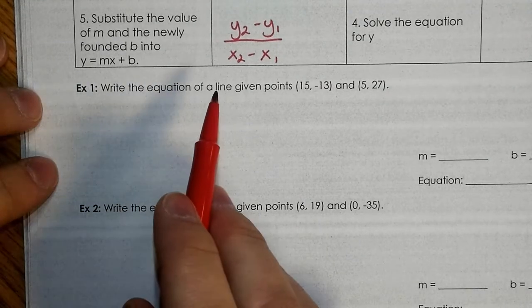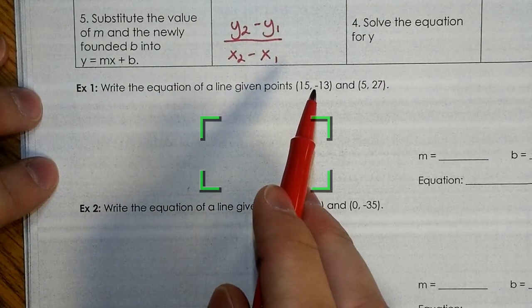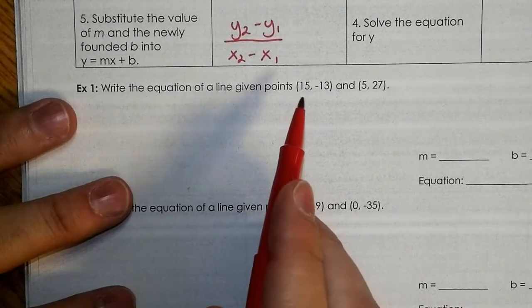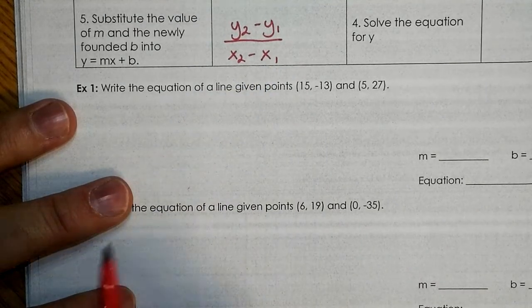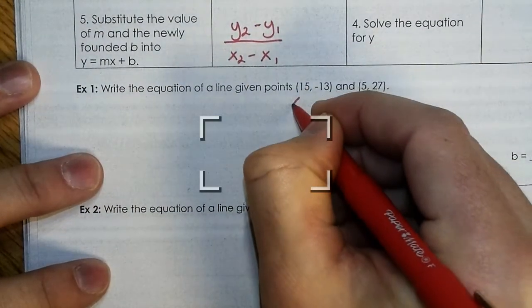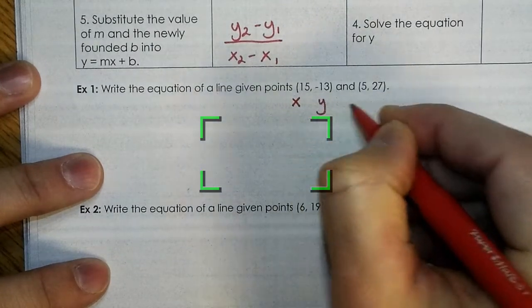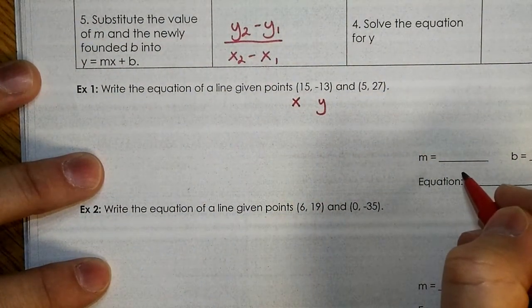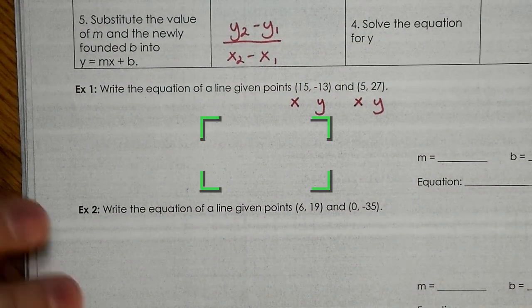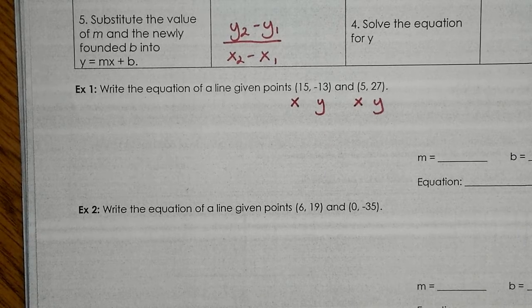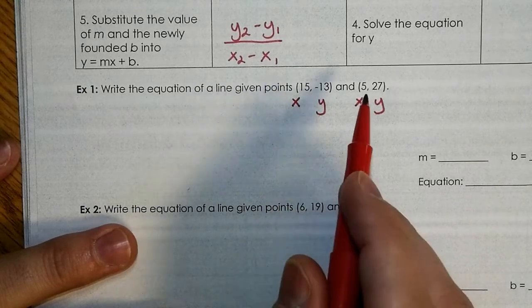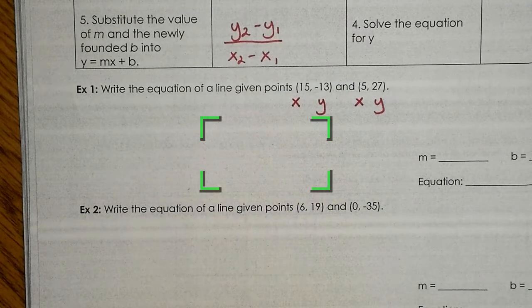So, right here. Write an equation of a line given points. You got (15, -13) and (5, 27). Are we cool with that? There's two points. Emily, help us out. Tell us our X and our Y for this one. What's our X? What's our Y? So, the first one is X. Yes. And then the next one is Y. Perfect. What about the next one over here? The same thing. Yeah. Does it ever change? No. Yeah. It doesn't change.